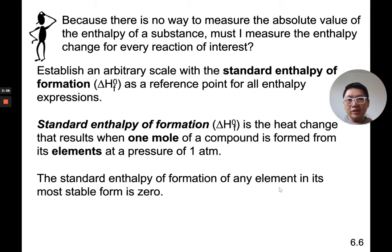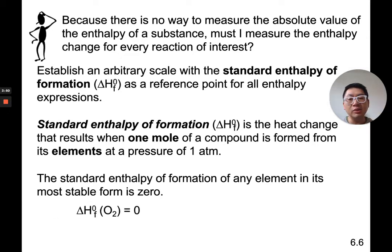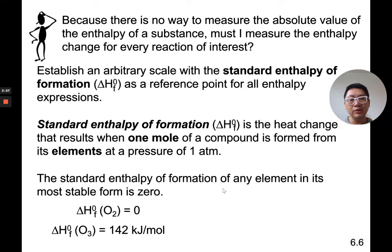These are not numbers you would ever memorize. For any pure element, its most stable form has a heat of formation of zero. Heat of formation of oxygen — the most stable form of oxygen is O2 — is zero. However, for ozone O3, that's not the most stable form of oxygen. It does take 142 kilojoules of energy to make one mole of ozone O3 from oxygen. These numbers you don't memorize; they're in a table in the next slide.